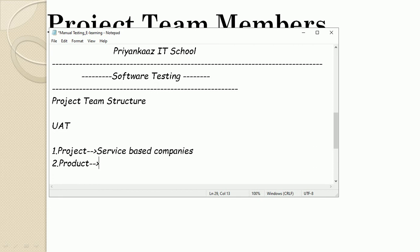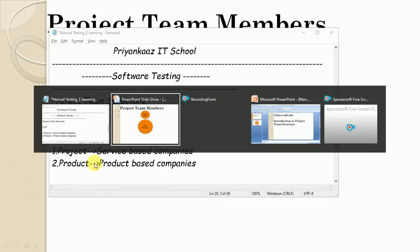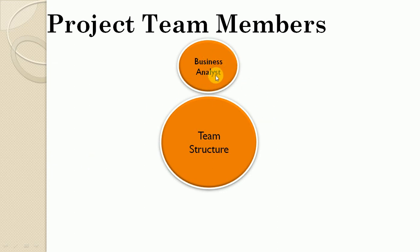Examples of service-based companies include TCS, Infosys, and Wipro. Examples of product-based companies include Microsoft, Google, and IBM. The Business Analyst gathers all client requirements, conducts feasibility studies on those requirements, and acts as an interface between the client and the project team.